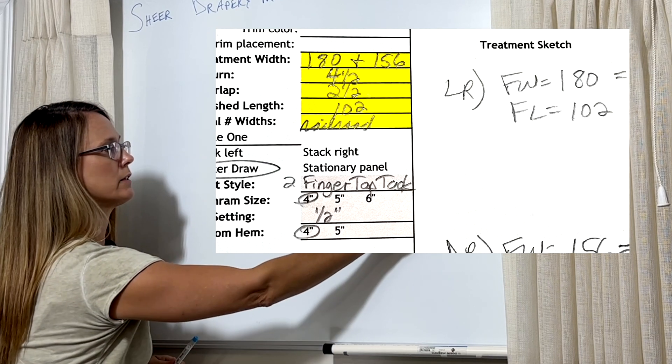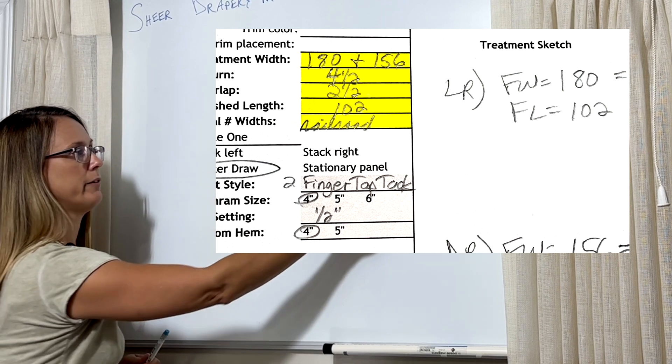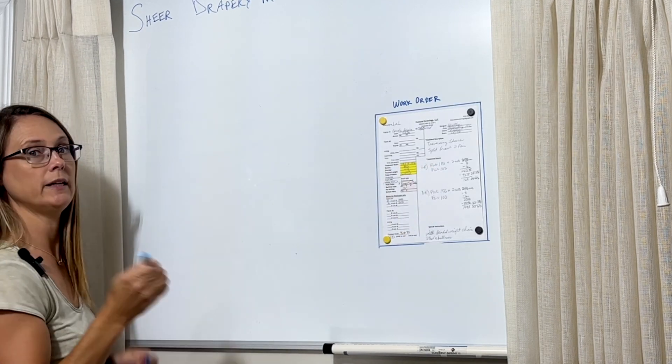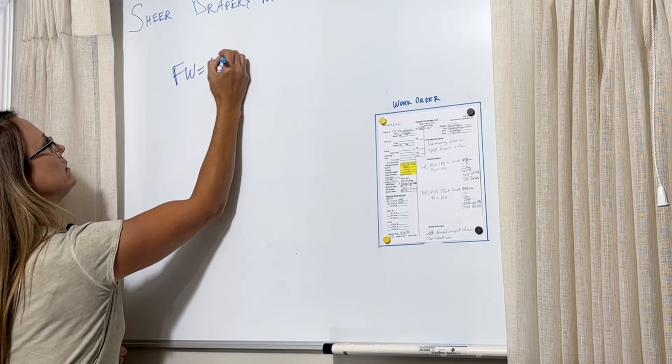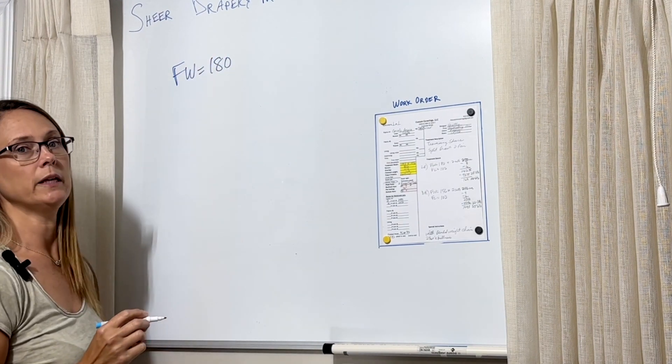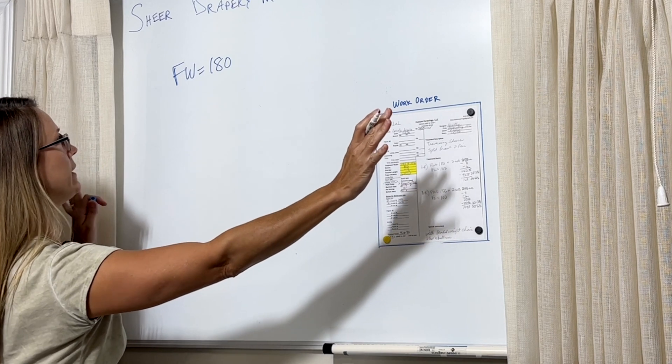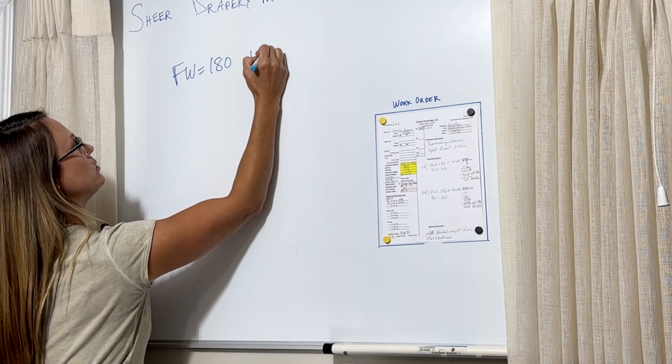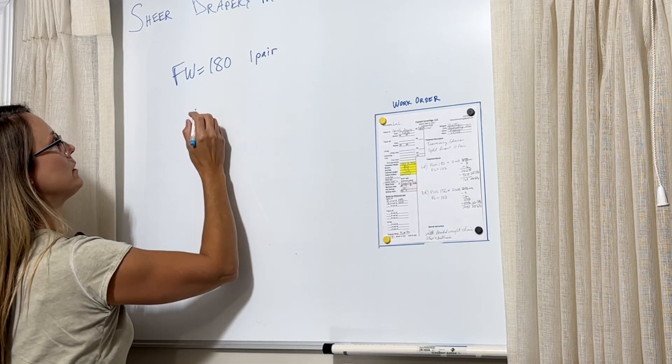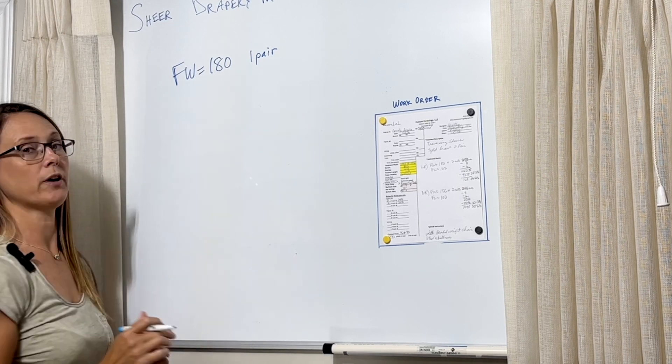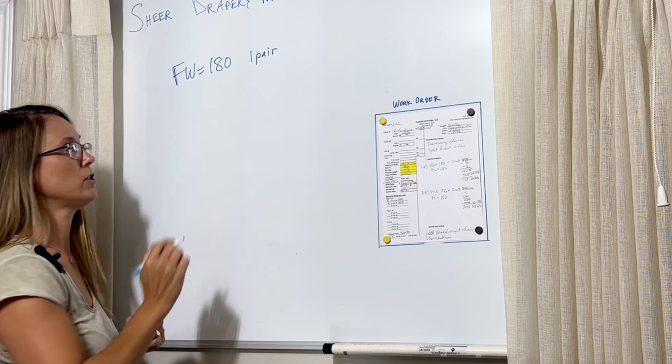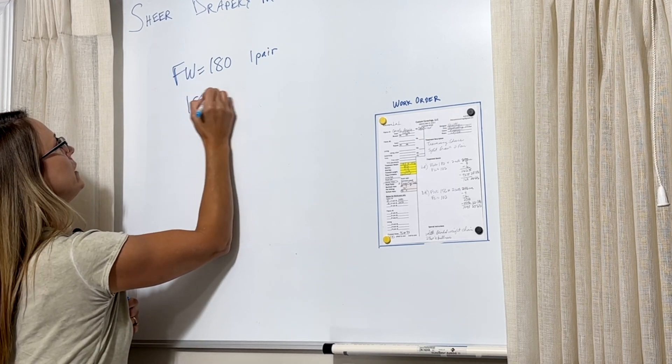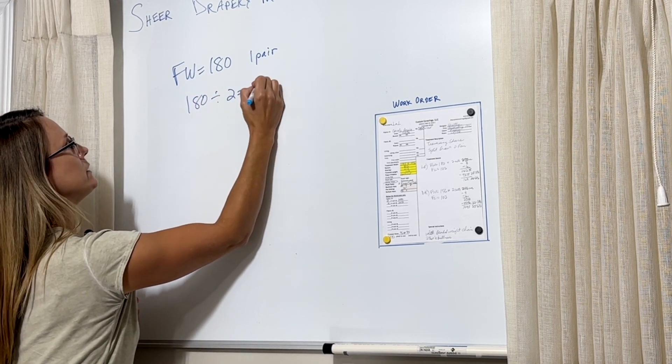And here's the work order. The finished width of the living room drapery is 180 inches. That means that's how big the rod is going to be, total rod, and it's a pair. So that means there's two panels. In order to figure out how big each panel needs to be, we just divide the 180 by 2, and we divide it by 2 equals 90.